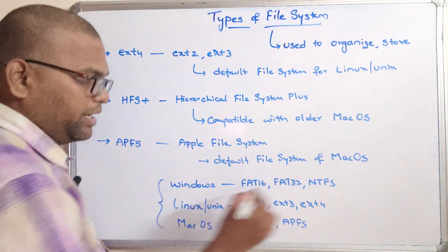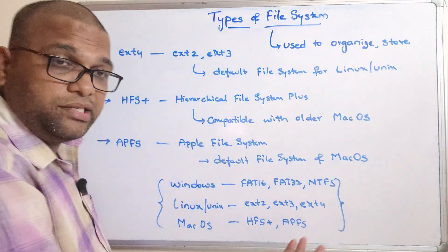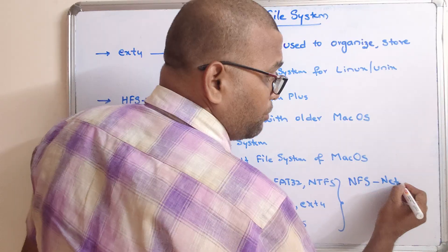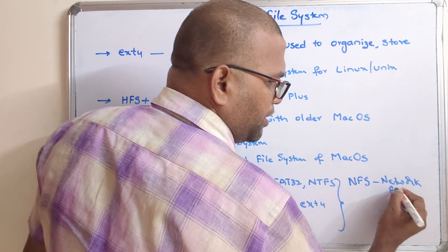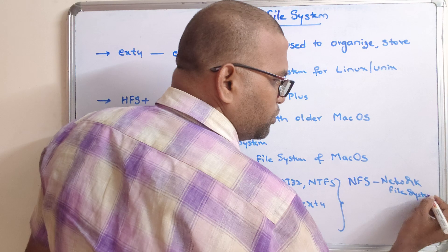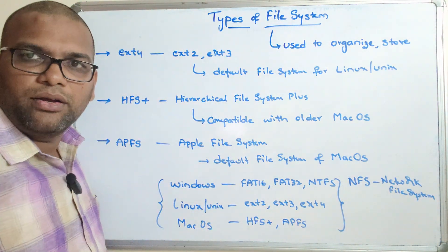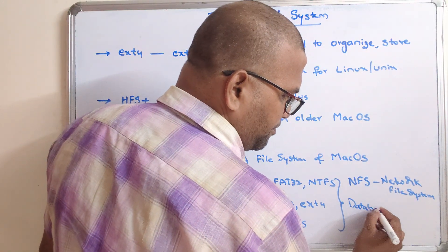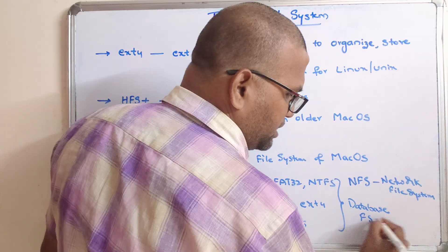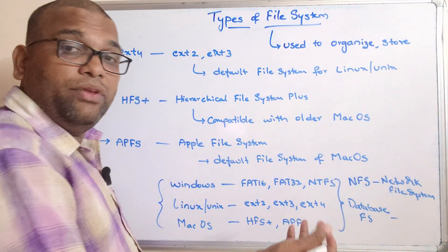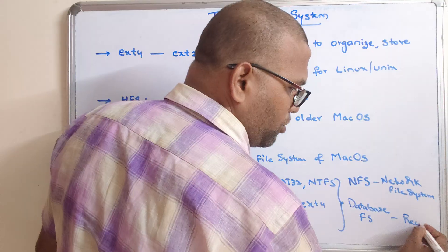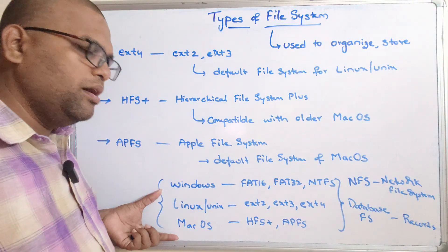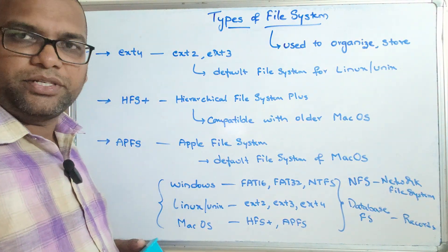Apart from all these, there are a few more file systems: NFS, which stands for Network File System, which is used in networks. Similarly, there is a Database File System, where the data is represented and stored in terms of records. These are a few additional file systems, but the ones covered earlier are the major file systems for different operating systems.